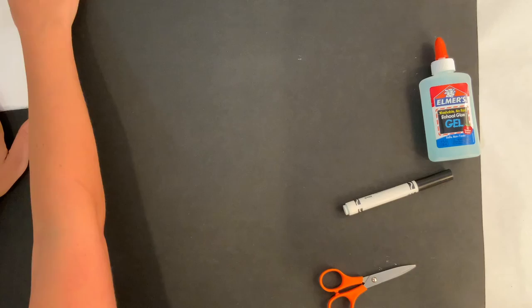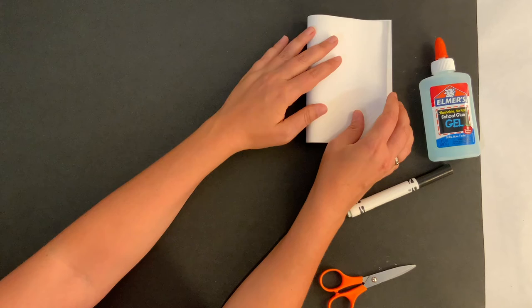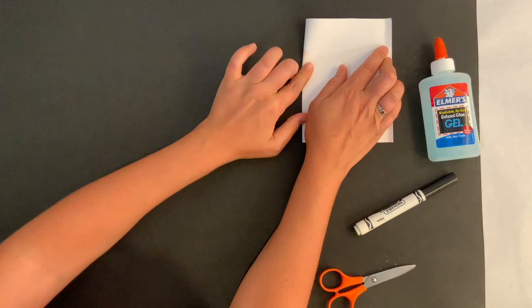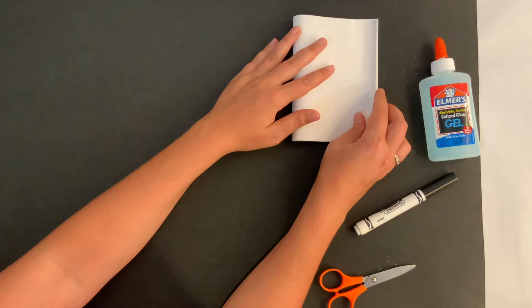Paper number three. Fold, match the corners. Press, press down. And paper number four, the fourth part of the book. Fold it, match the corners, and press it down.